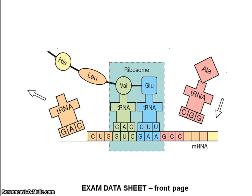A lot of information is given there, but all you need is what's on the exam data sheet on the front page. It shows you just a few amino acids, transfer RNA molecules, and their codes and anti-codons. You've got alanine with anti-codon CGG and the messenger RNA code GCC, so you would be expected to make use of that information in the exam. Leucine's anti-codon and messenger RNA codon are there as well, along with valine and glutamine.